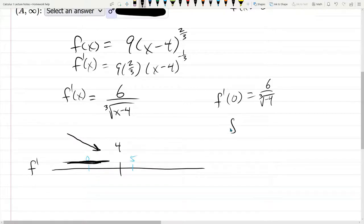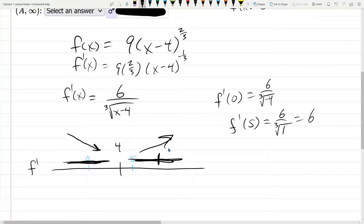Now when I plug in 5, 6 over the cube root of 5. I'm plugging in 5 and getting 5 minus 4 is 1. The cube root of 1 is 1, so that's positive 6. So we're going to be positive over here. We're going up.